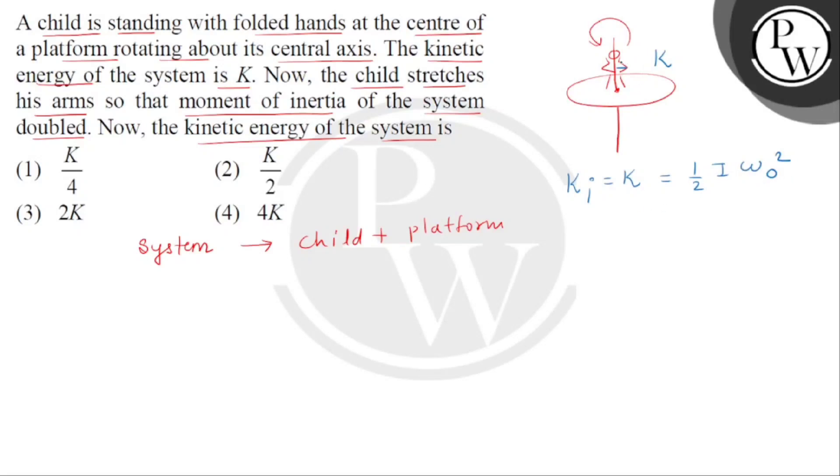Now this child stretches his hands. So distribution of mass is away from the axis of rotation. Given that I2 becomes two times of I. The moment of inertia of the system is doubled. So here we can see that the external torque is zero.